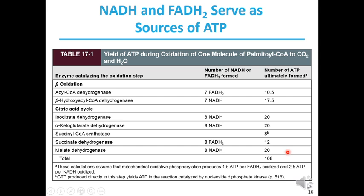How does this happen? NADH and FADH2 serve as sources of ATP. Mitochondrial oxidative phosphorylation produces 1.5 ATP per FADH2 oxidized and 2.5 ATP per NADH oxidized. Beta-oxidation produces 7 FADH2 and 7 NADH. From the citric acid cycle, we get 24 NADH and 8 FADH2, plus 8 GTP. Accounting for all of these, the total count of ATP molecules comes to 108.